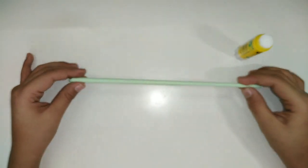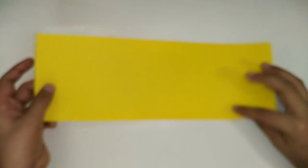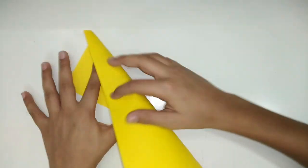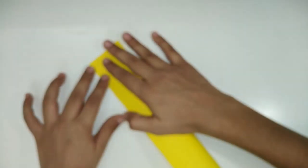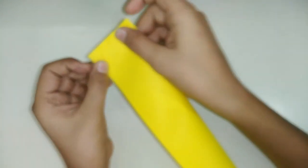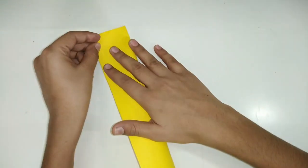Now take the yellow sheet and fold it this way. It should be aligned very correctly.